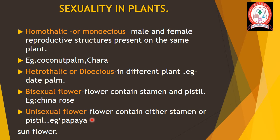In unisexual flowers, the flower contains either stamen or pistil. If the flower contains only stamen, they are called staminate flowers; if only pistil, they are called pistillate flowers. Examples include papaya and sunflower.